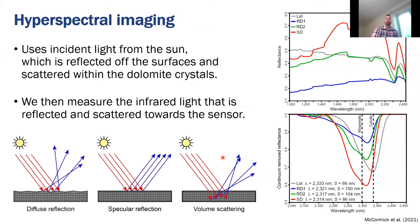So hyperspectral imaging uses the incident light from the sun and the light can be either reflected or scattered before it reaches our detectors here on these blue lines. We measure light in the infrared part of the electromagnetic spectrum. Here's the wavelength range of our detectors here. Our detectors measure a reflectance value at each of these wavelength increments along these plots and we obtain a spectrum that is characteristic of each dolomite type here, each of these colored lines.